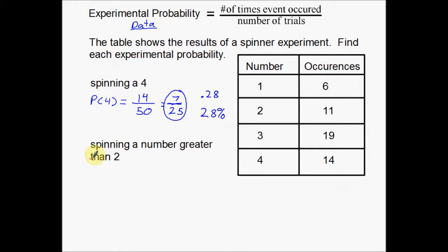spinning a number greater than 2. So we're looking for the probability of spinning a number greater than 2. So I'm not going to write out that whole sentence. I can use just a little bit of notation. Maybe you have a variable in here to kind of shorten that up. So the probability of a number greater than 2. So again, we're going to take the number of events that occurred over the total number of trials.